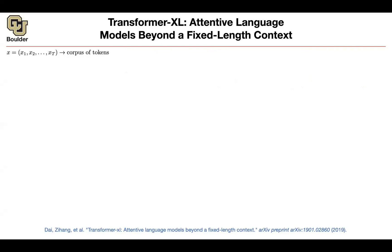Somebody gives you a corpus — it's a large corpus — and this corpus is going to have some words in it. The task of language modeling is that given the past information, you want to predict the next word. And basically you are trying to model the probability of your corpus or your sentences.